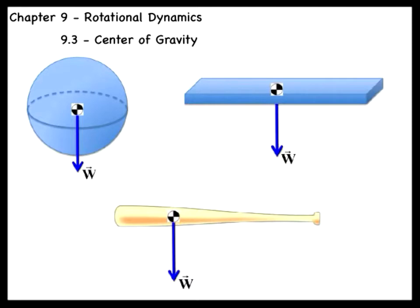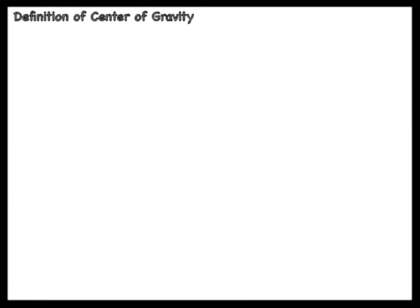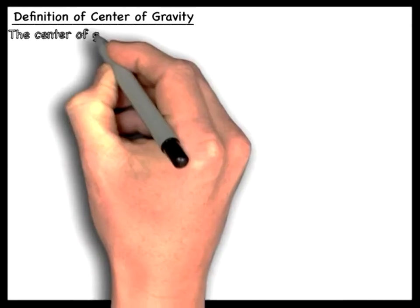For any rigid object, symmetrical or otherwise, this point where the weight of the object can be considered to produce a torque due to its weight is known as the center of gravity.